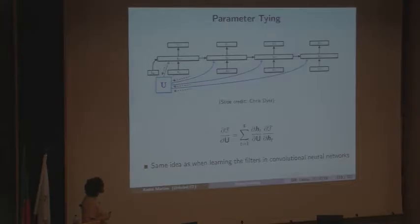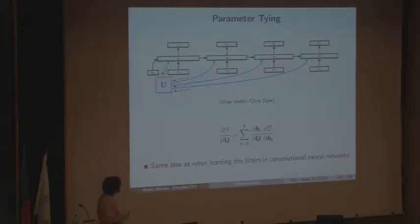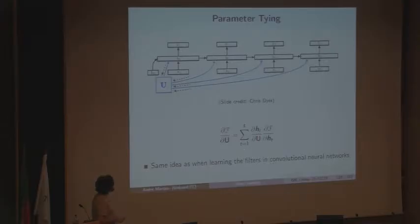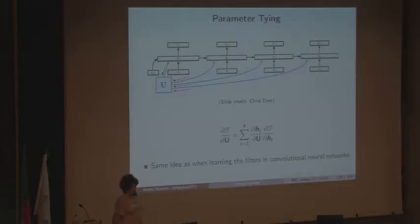Here's an illustration of parameter tying. In the computation graph, we have a parameter node U that allows us to compute H1 from X1. We need to compute the gradient of function f with respect to parameter U using the chain rule, summing for every time step the derivative of state H_t with respect to U times the derivative of the loss function with respect to H_t. This idea of parameter tying is exactly the same as in convolutional neural networks.